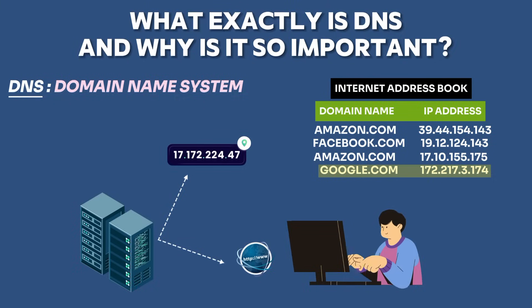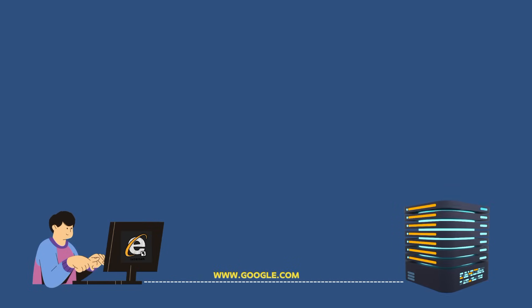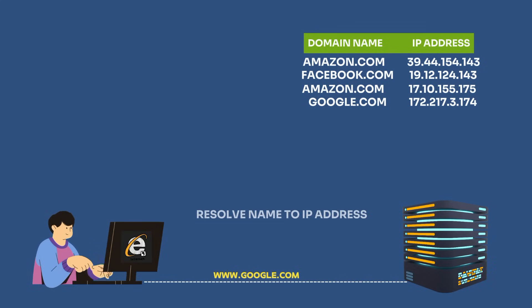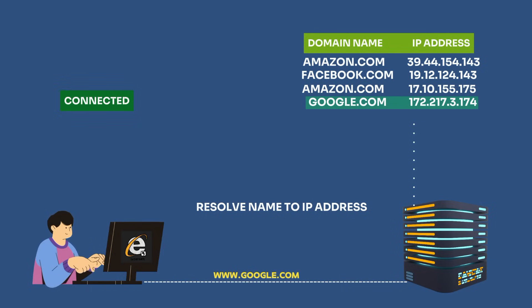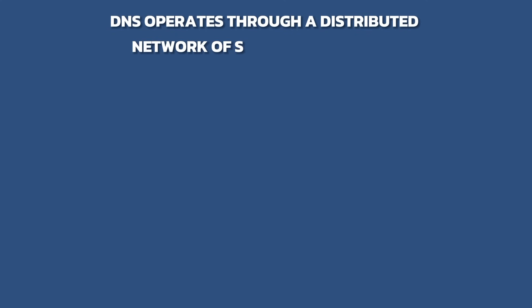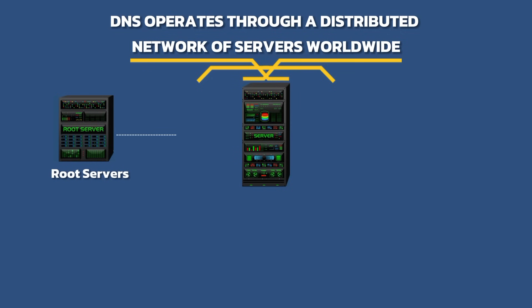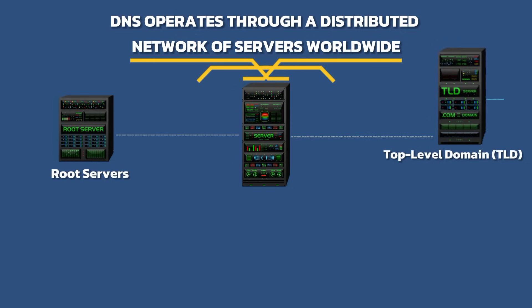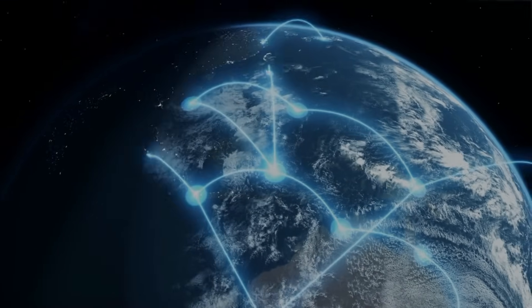When you type a domain name into your web browser or any other internet-connected application, your device sends a request to a DNS resolver to find the IP address associated with that domain name. The resolver then communicates with authoritative DNS servers to obtain the correct IP address. DNS operates through a distributed network of servers worldwide, organized hierarchically, consisting of root servers, top-level domain (TLD) servers, authoritative name servers, and recursive resolvers, each playing a specific role in the resolution process.